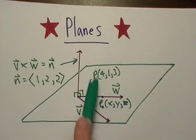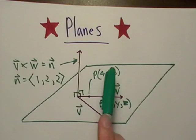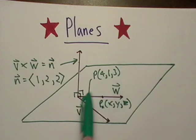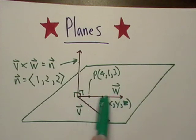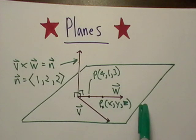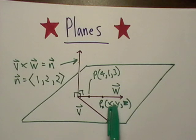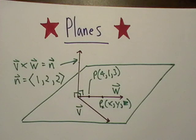Point (4, 1, 3) is also on the plane, and it also happens to be on this vector. We just have to assume that there's another point on the plane — X — and that's a realistic assumption if you think about it.